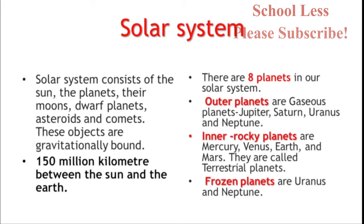There are 8 planets in our solar system. There are 4 outer planets and 4 inner planets. The inner planets, closer to the Sun, are Mercury, Venus, Earth and Mars. The inner planets are rocky — the terrain is rocky. They are called the terrestrial planets or rocky planets.